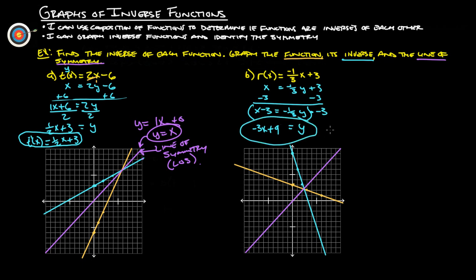Again, if we were to write the correct notation, it would be r to the negative first of x equals negative three x plus nine. That's the inverse function.